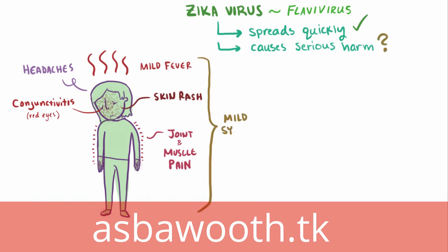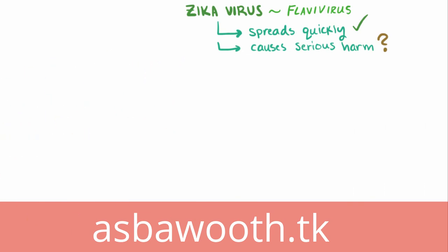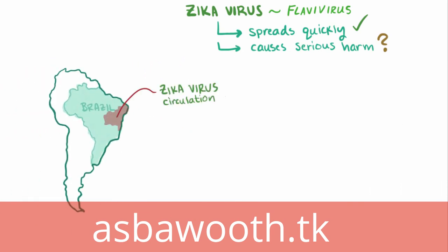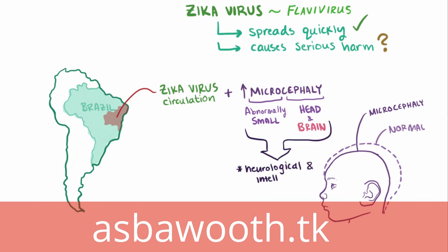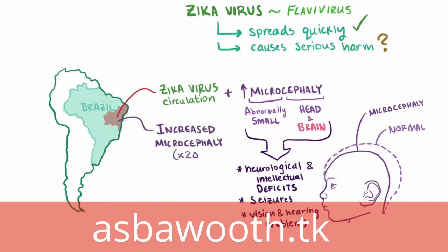Although Zika causes mild symptoms in adults, there's more to the story. In October 2015, in areas of Brazil where Zika virus had been circulating quite a bit, public health officials noticed a significant increase in babies born with microcephaly, which is when a child is born with an abnormally small head and therefore abnormally small brain size. This has the tendency to cause serious neurological and intellectual deficits, seizures, as well as vision or hearing problems — with up to a 20-fold increase among Brazilian states with Zika virus outbreak.